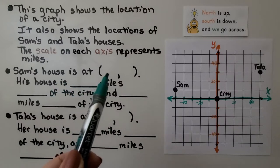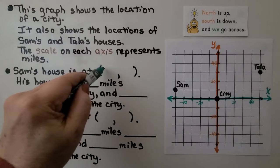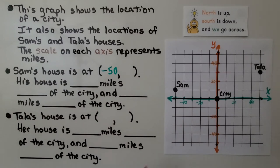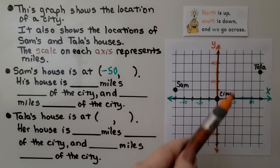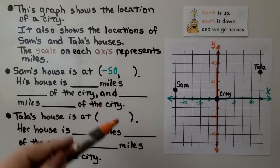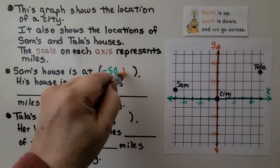Sam's house is at, we need the x and y coordinates for Sam's house. Starting from the origin, we're going into the negatives. So, we have negative 10, negative 20, negative 30, negative 40, that would be negative 50 for x. We look at the y value, and it's going 10, 20, 30, 40. So, it's one increment, it's one unit, it's 10. And it's a positive 10, because it's up here.